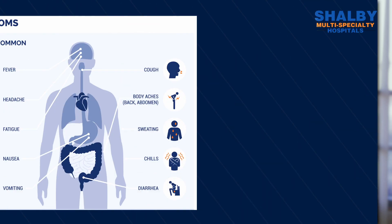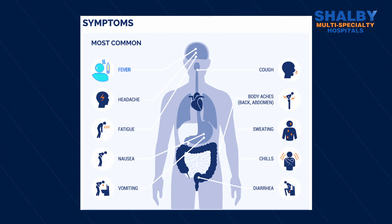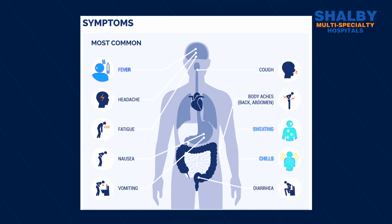The first and commonest symptom of malaria is fever. Fever is often cyclical — meaning sometimes it comes every alternate day — and is associated in most cases with chills, rigors, or even sweating.